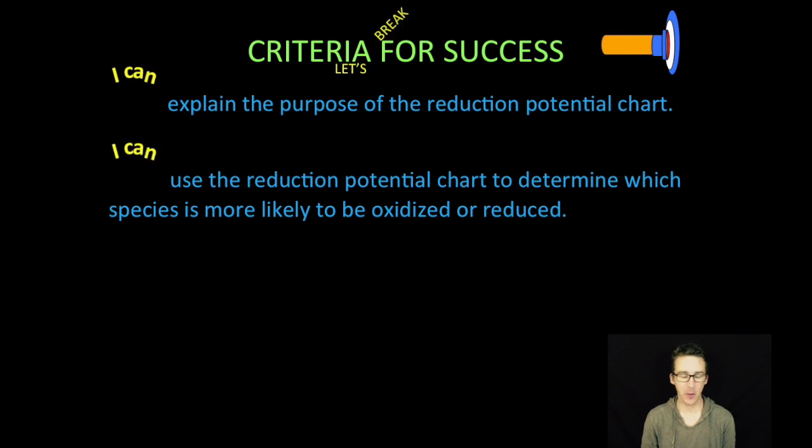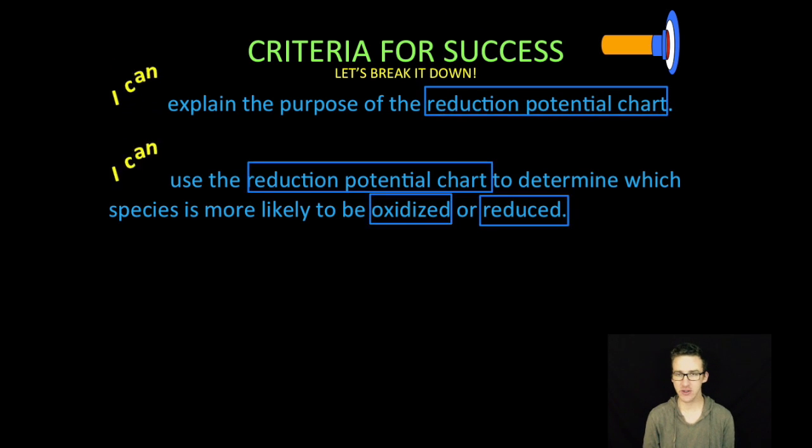All right, breaking it down a little bit, there is a lot to oxidation and reduction. In this particular video, we are going to first explain the purpose of the reduction potential chart. Numero dos, we are going to use that reduction potential chart to determine which species is more likely to be oxidized or reduced.